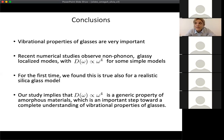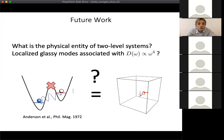For the first time, we found that this is true also for a realistic silica glass model that has more than a simple two-body interaction. Our study implies that this density of states that follows ω^4 is a generic property or might be a generic property of amorphous materials. This is an important step towards a complete understanding of glass and glass transition.